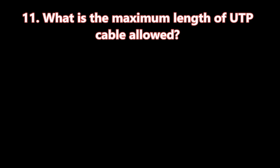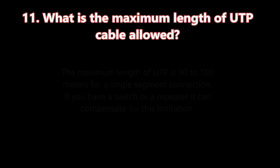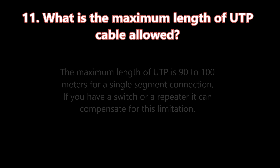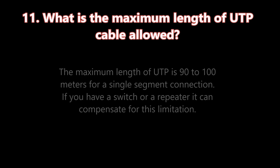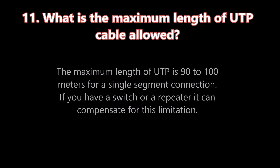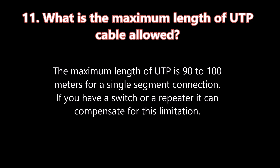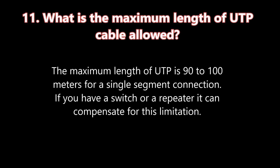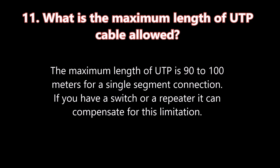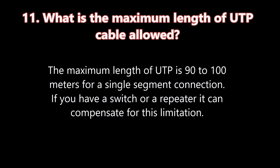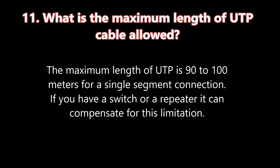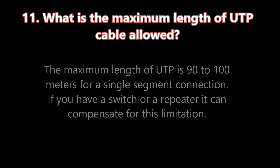Question number eleven: What is the maximum length of UTP cable allowed? The maximum length of UTP is 90 to 100 meters for a single segment connection. If you have a switch or a repeater, it could compensate for this limitation.